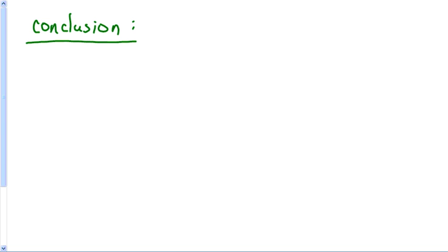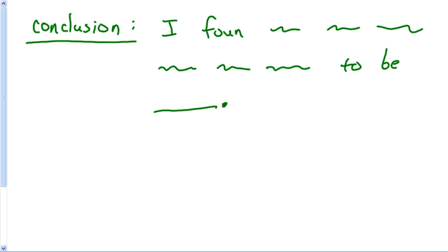The only thing I need at this point is like a conclusion. And my conclusion is going to be nothing but all you're going to do in the conclusion is: I found the empirical formula for magnesium oxide to be blank, and I hope that for you it is MgO.